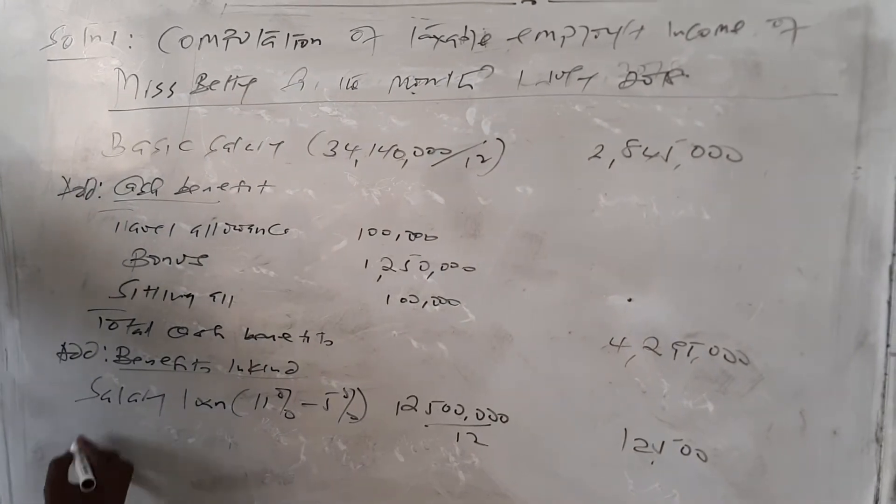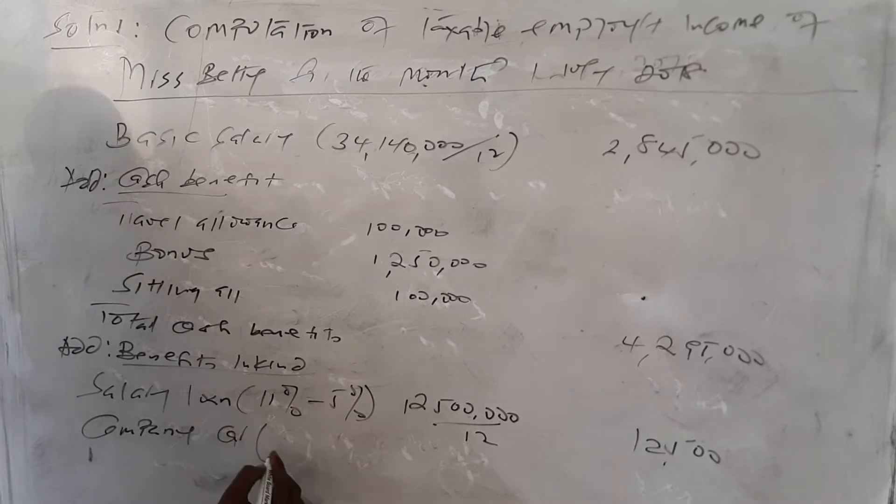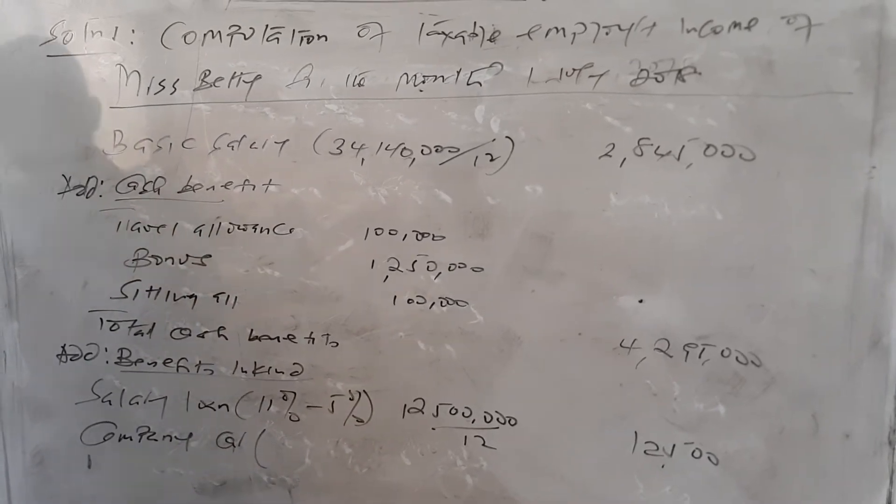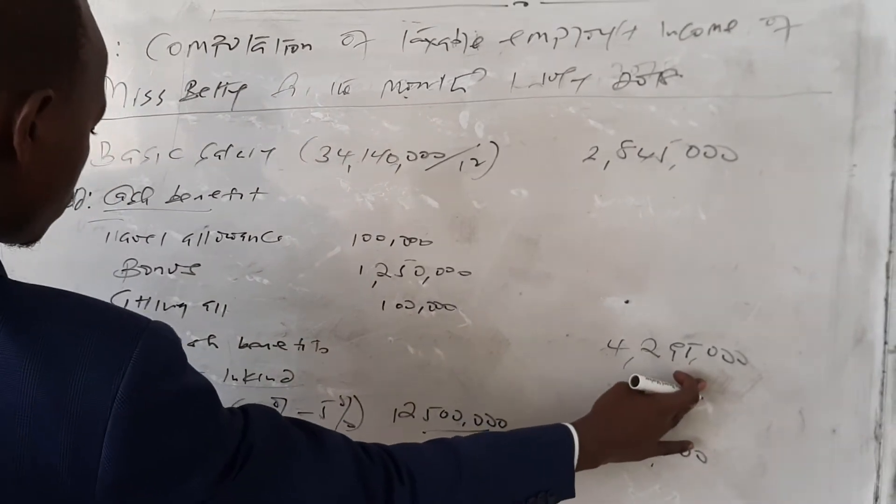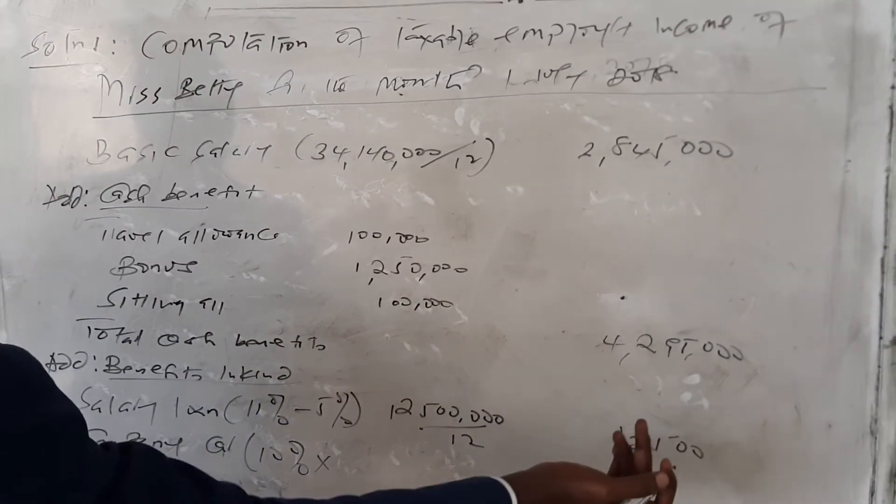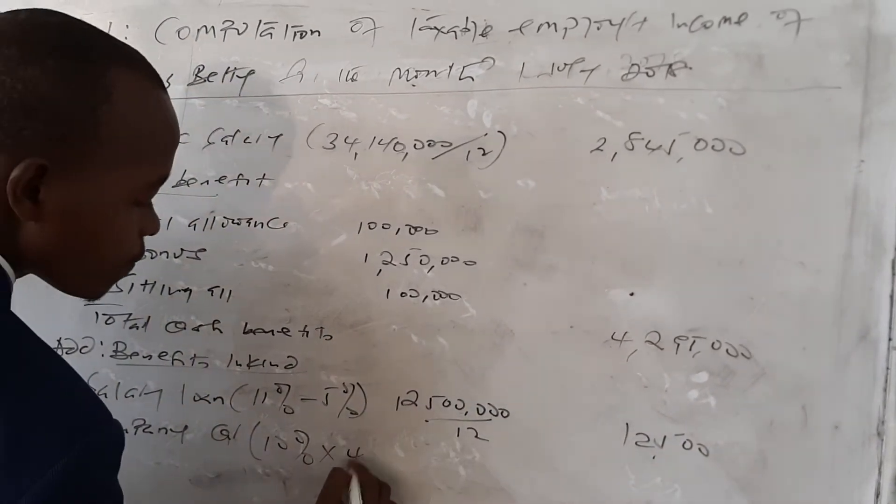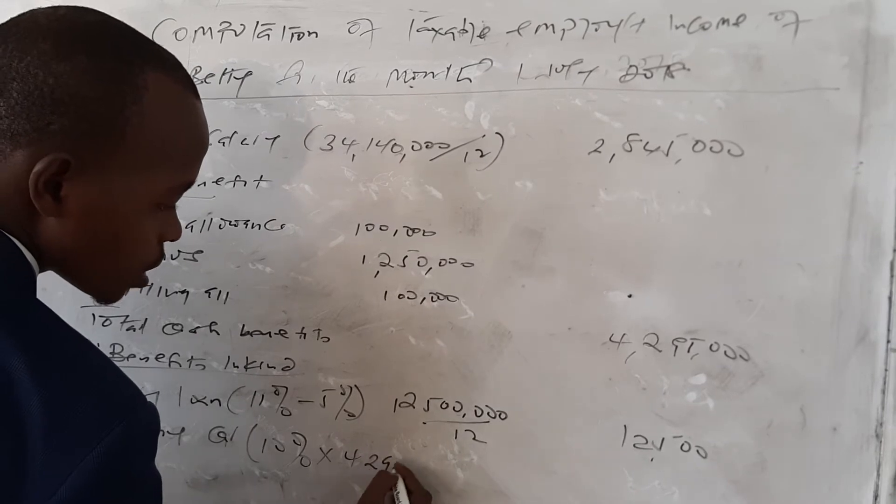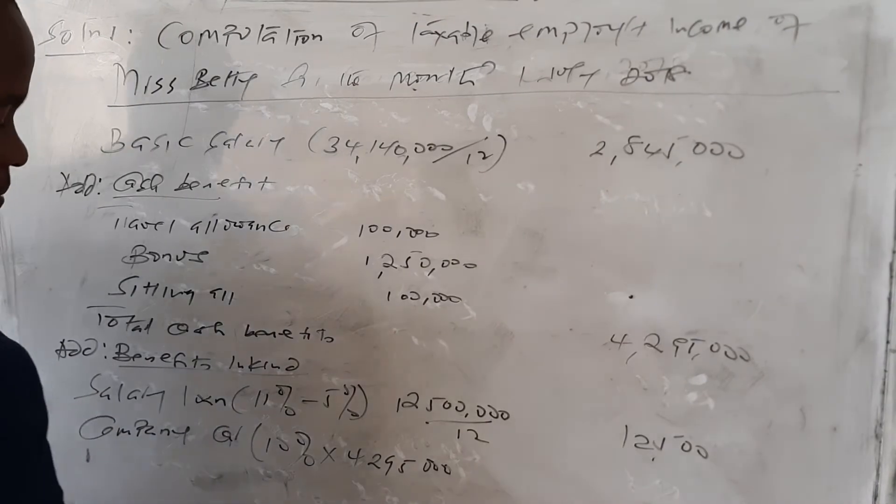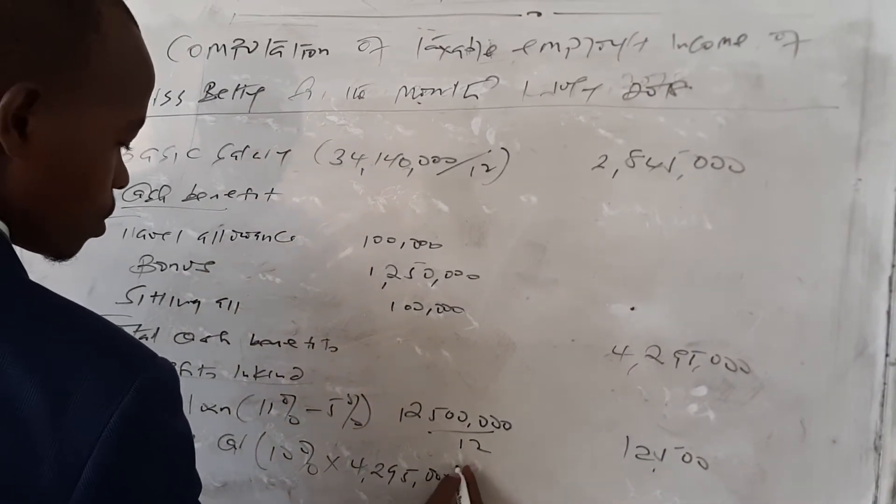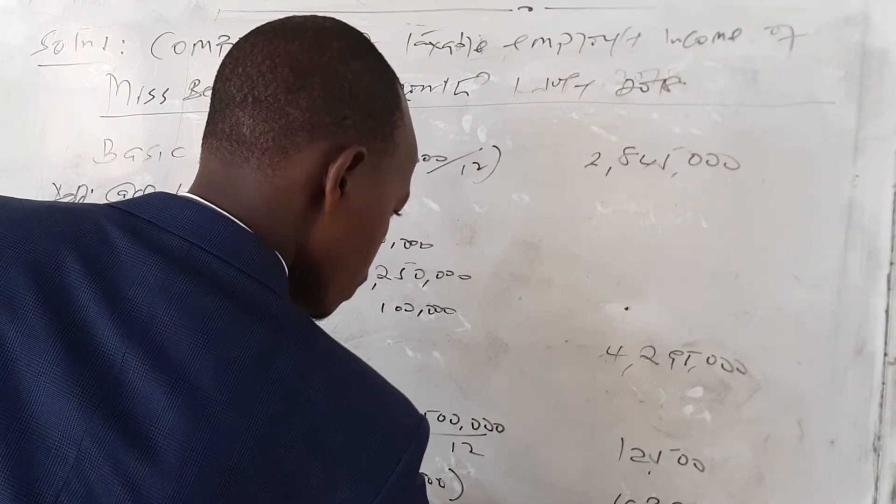And again, the company contribution, which is always 10% of the gross salary, which is 4,295,000, giving us 429,500.